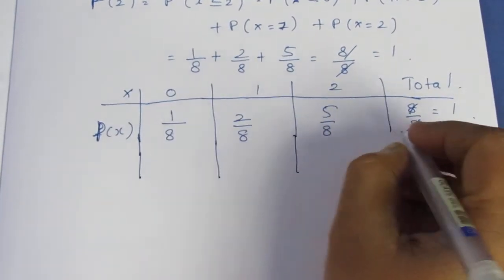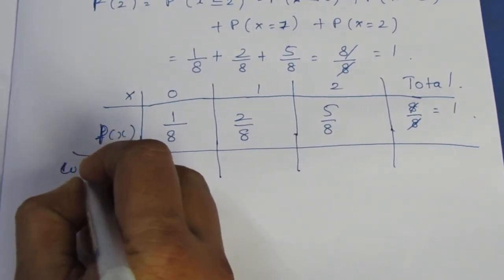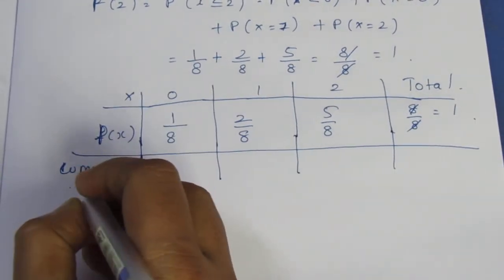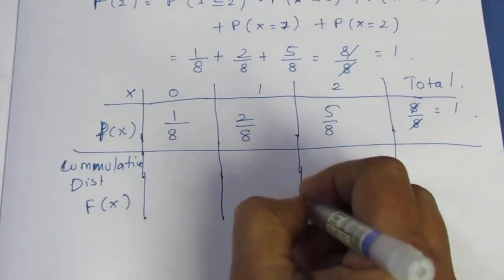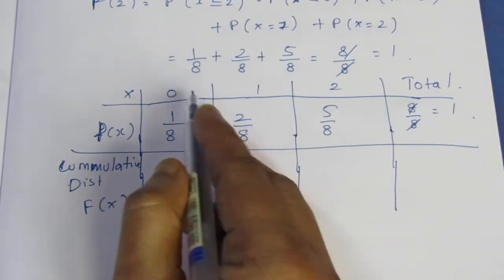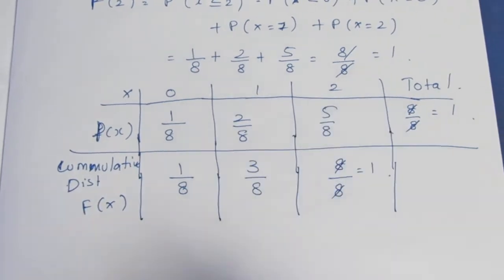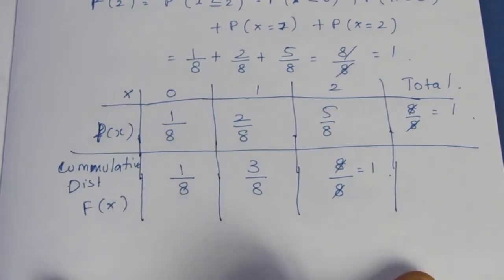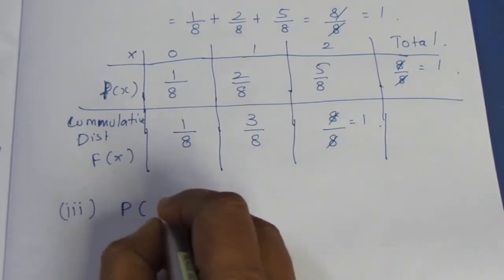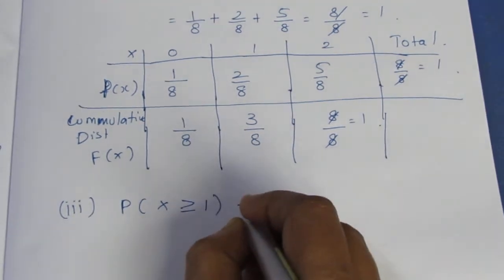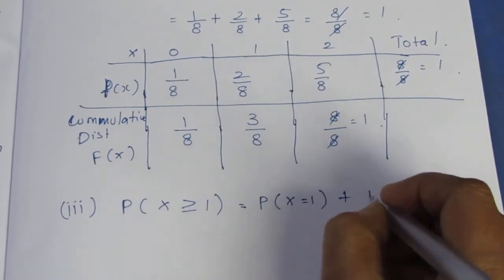Next, the cumulative distribution function F(x) is written as: F(0) = 1/8 for x ≤ 0, F(1) = 1/8 + 2/8 = 3/8 for x ≤ 1, and F(2) = 1 for x ≤ 2. This is the complete cumulative distribution function.